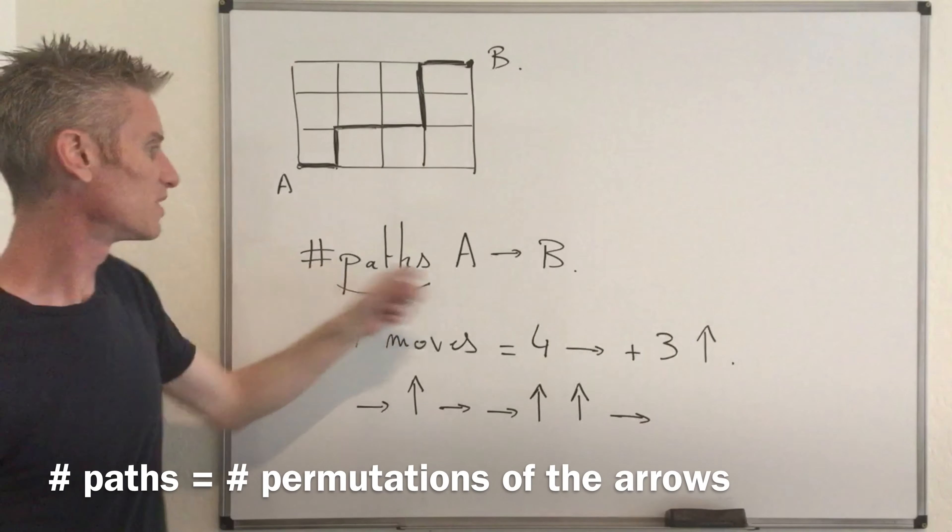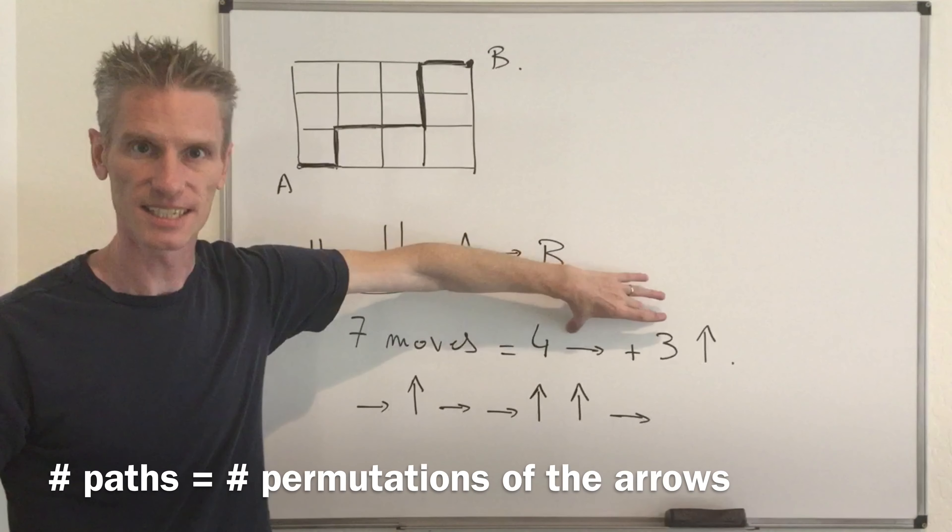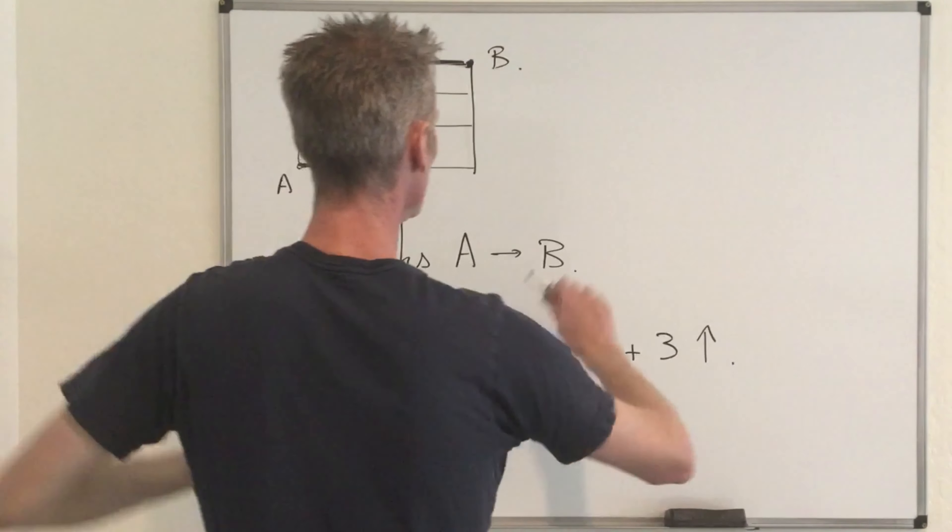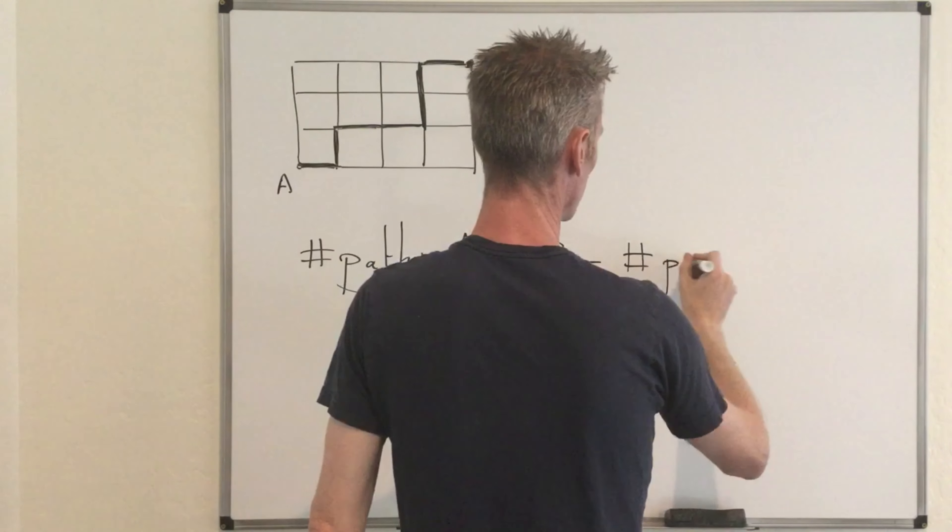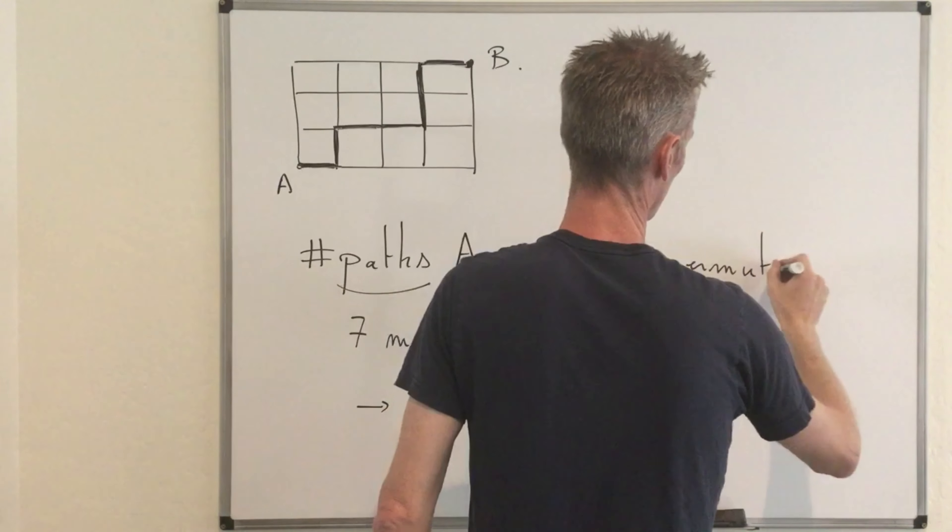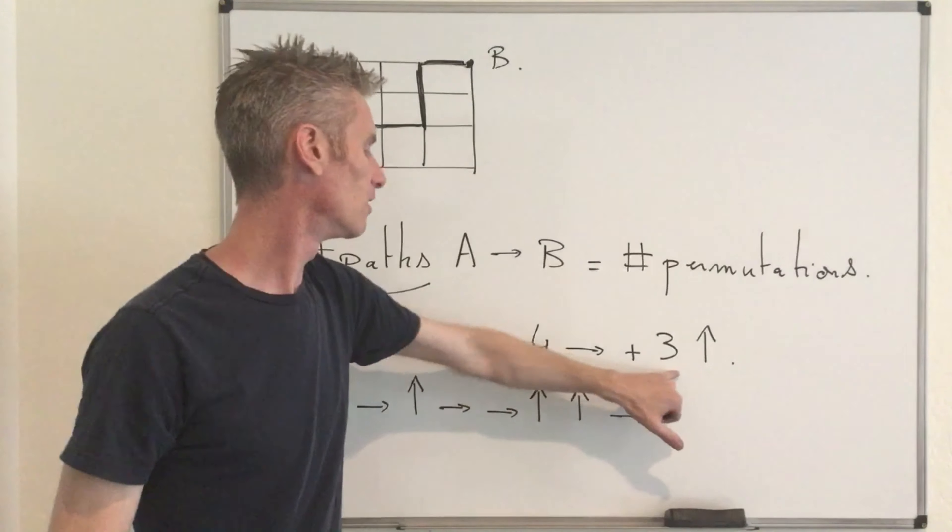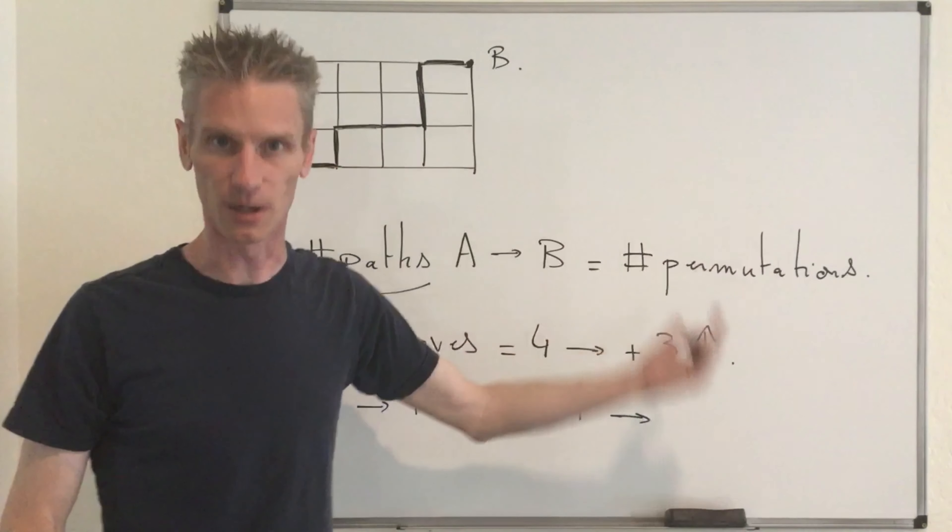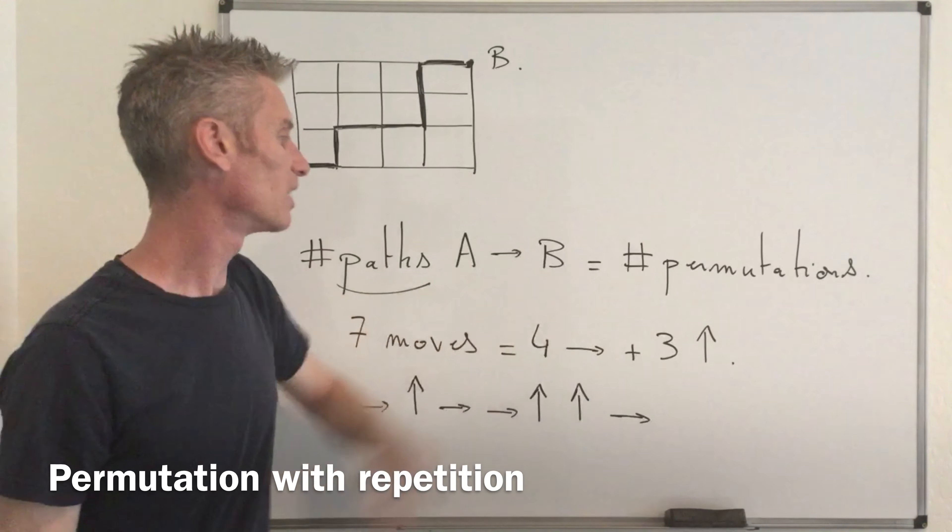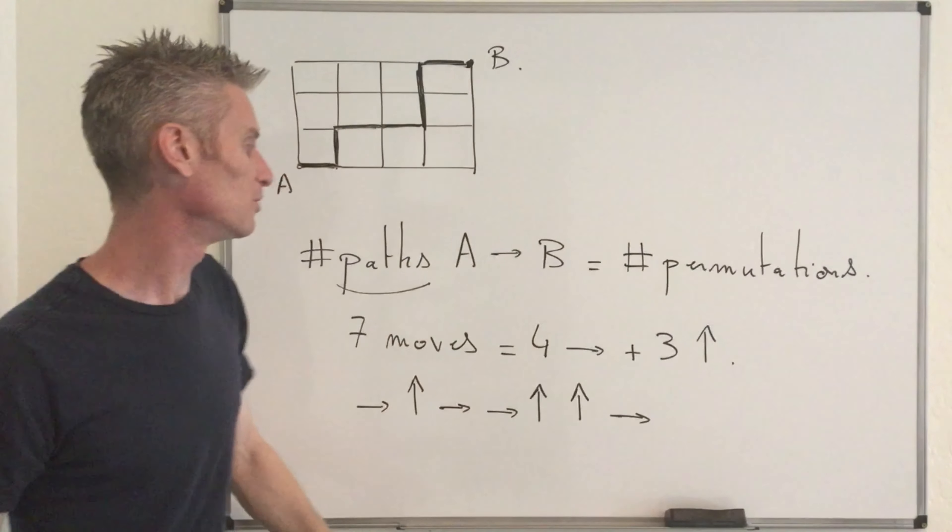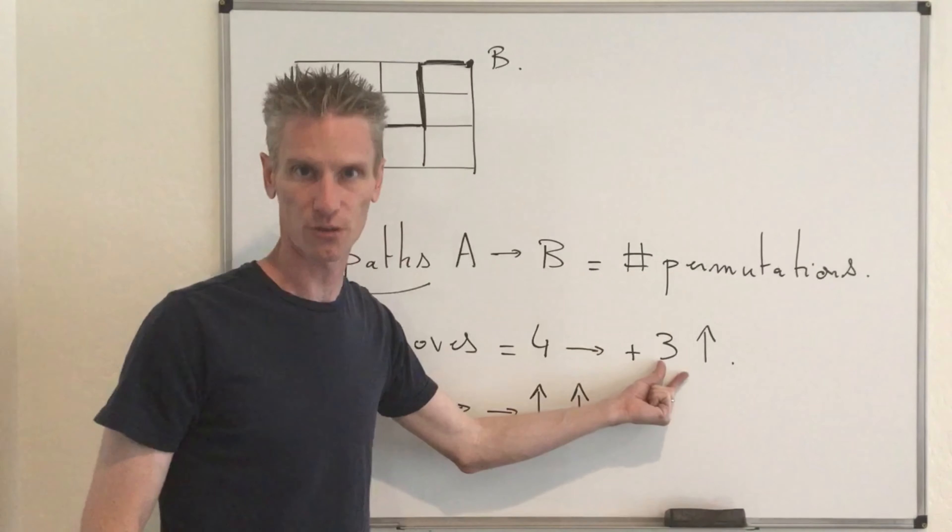So from that, you can conclude that the number of possible paths is equal to the number of possible permutations of those symbols. So eventually, you end up with the number of possible paths is equal to number of permutations of four right arrows and three up arrows. That's an example of permutation with repetition. And in this case, the total number of permutations is going to be equal to seven factorial divided by four factorial times three factorial.